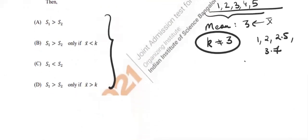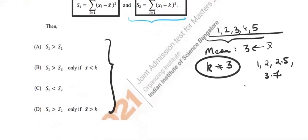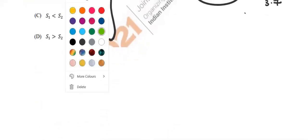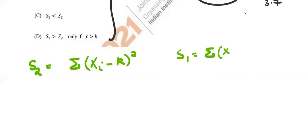Let's try to solve this. We begin with S2. S2 is defined as the summation of (xi minus k) whole squared, and S1 is the summation of (xi minus x̄) whole squared.